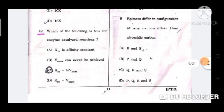Question number 42: Which of the following is true for enzyme catalyzed reactions? Correct option is option C, Km is equal to 1/2 Vmax.